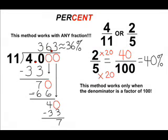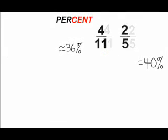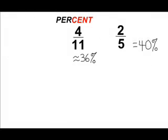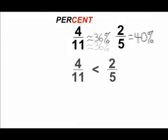Now we can clearly see that 2/5 is a larger fraction than 4/11 because 2/5 is equal to 40% and 4/11 is approximately equal to 36%.